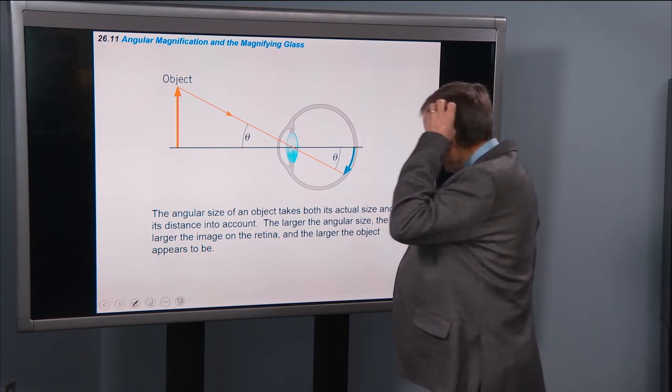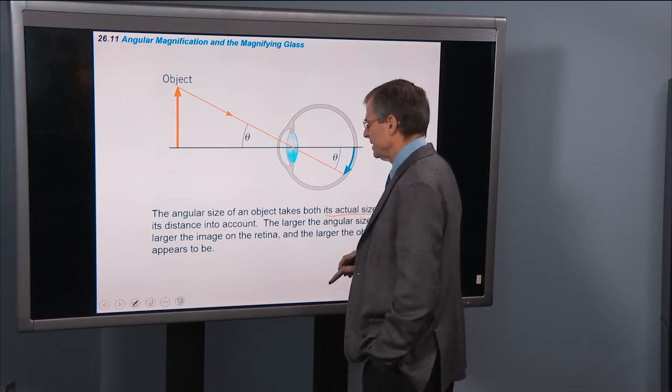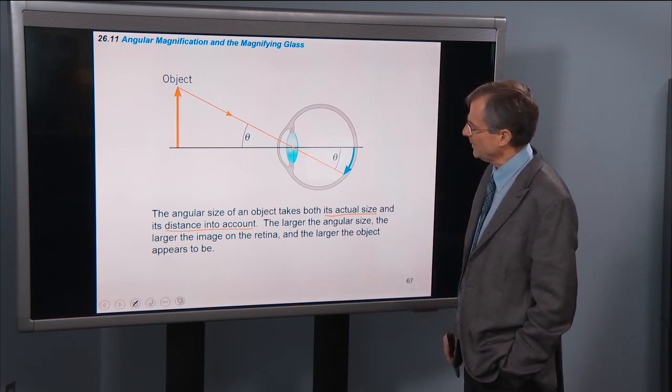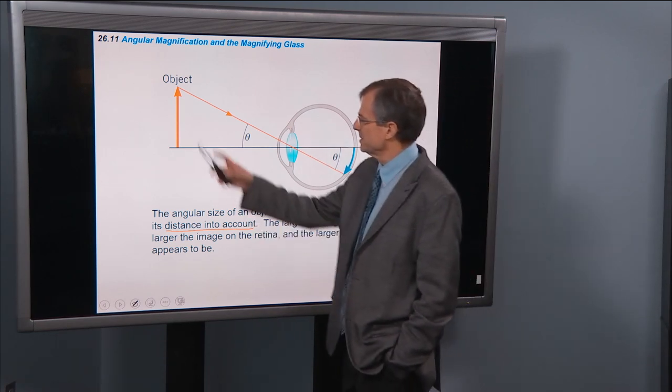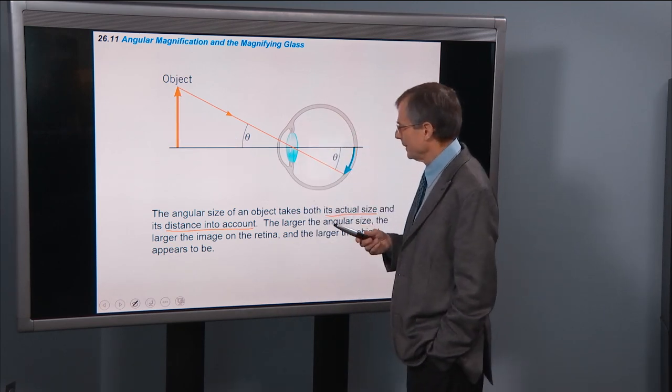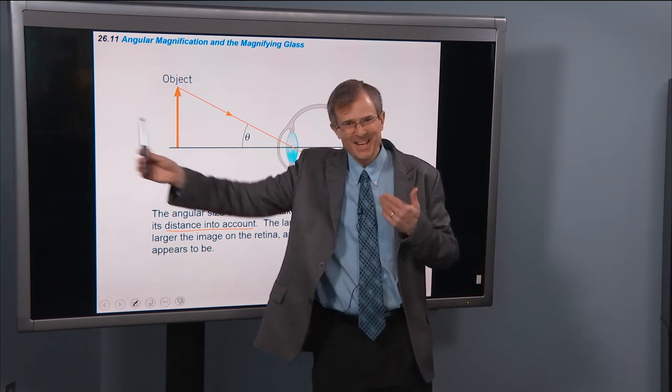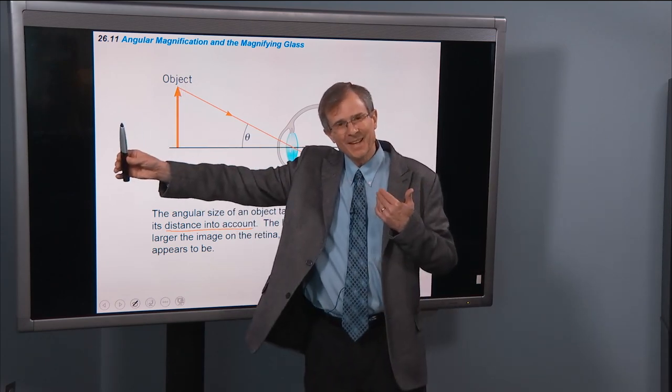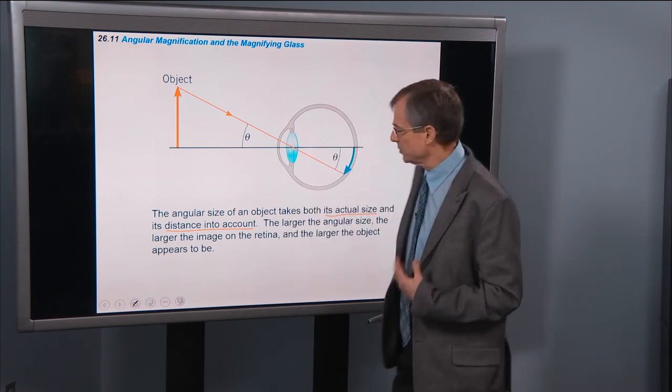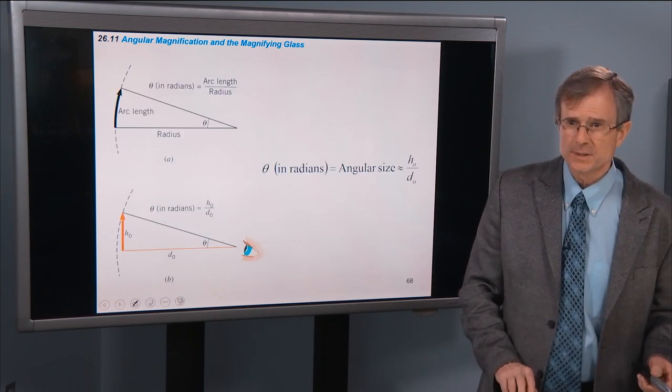The angular size of an object takes both its actual size and its distance into account. So if you have an object that's this tall, as tall as this pen, the size that it appears to be depends on how far that pen is away. If the pen gets really far away, then its angular size is going to be small, and it's going to look small to your eyes. So that's what this section is addressing.